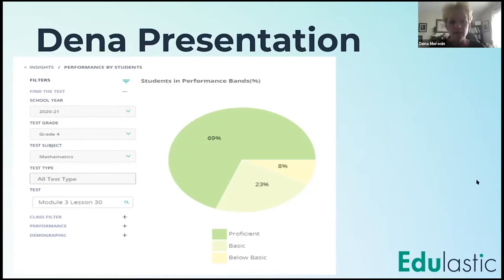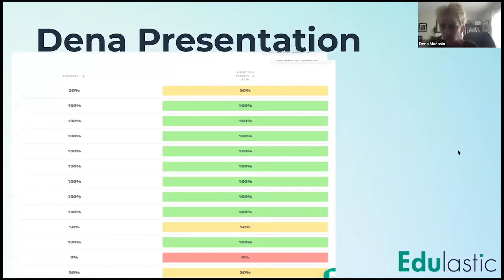And so go ahead and go to the next one, Jan. Again, this is just a different type of report. This one is called the standards report. And again, up at the top, you can see where it says the name of the standard. It's 4MBT. You can see the name of the standard very quickly and scroll down, and I can immediately see the four students who are below proficiency that I need to have an intervention with.